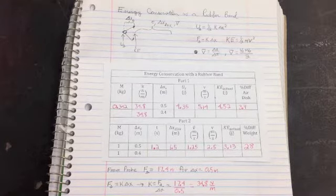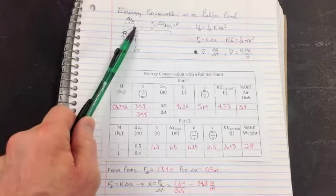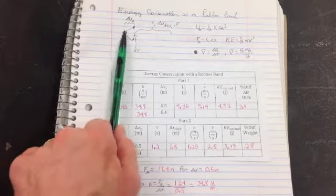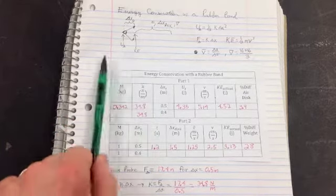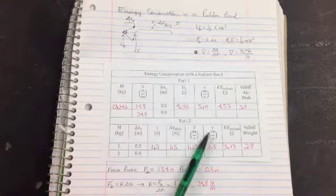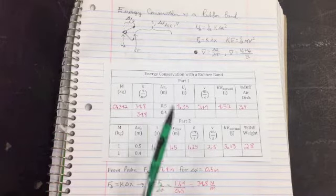This is the notebook for energy conservation with a rubber band. Here's the little diagram where we've got our rubber band attached to the legs of the table and it's stretched back. The Delta XS in this table is the distance the spring is stretched. On part two we have a different Delta X which I call Delta X disc.